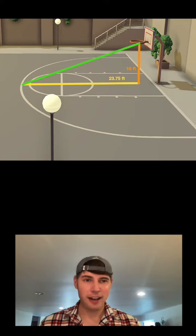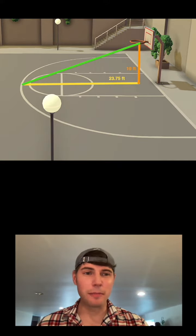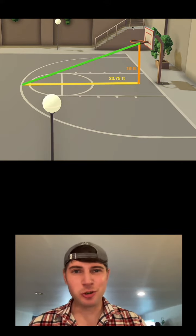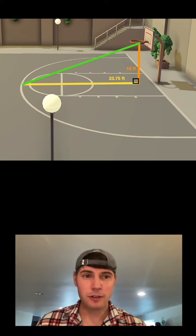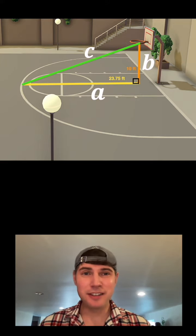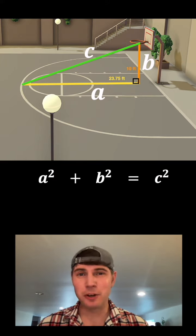So what I'm actually interested in is this distance right here. How far is it from the three-point line to the basket? And I recognize that this makes a triangle right here, and it ends up being a right triangle because this height right here is measured perpendicular to the floor. So if I call this side a, this side b, and this side c, I could do a² + b² = c².